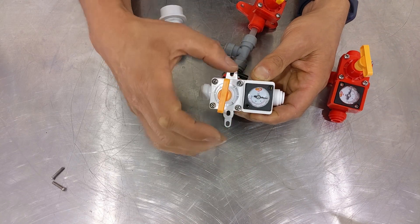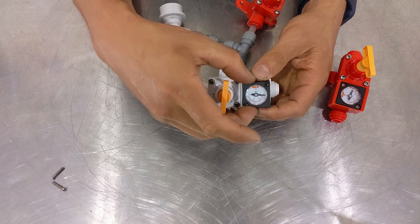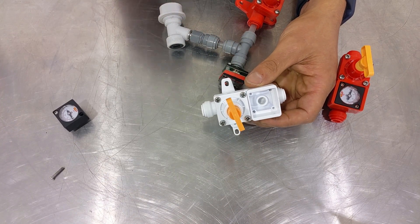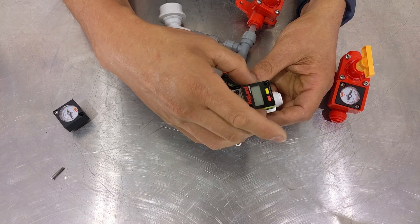What you can do is undo a couple screws that holds the stock standard gauge which comes included out of the inline regulator. You just remove this gauge by using a Phillips head screwdriver to remove these two screws.